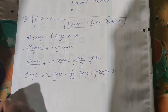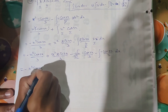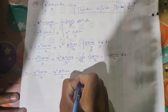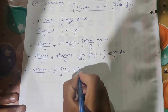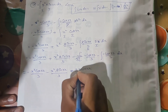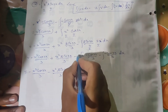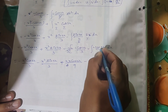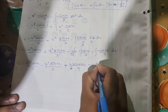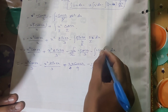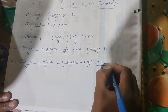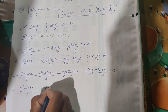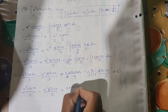Same process gives: minus x to the power of 3 cos(3x) divided by 3, minus x squared sin(3x) divided by 3, plus — because minus into minus is plus — 2 by 3 times x cos(3x), with 3 times 3 giving 9 in the denominator. So we get plus 2x cos(3x) divided by 9.